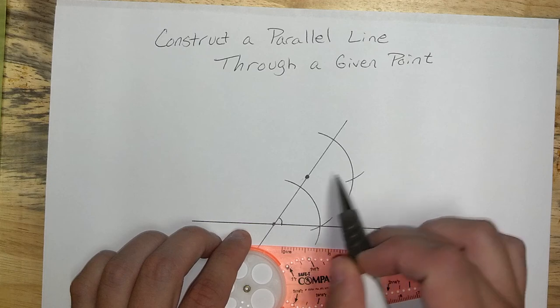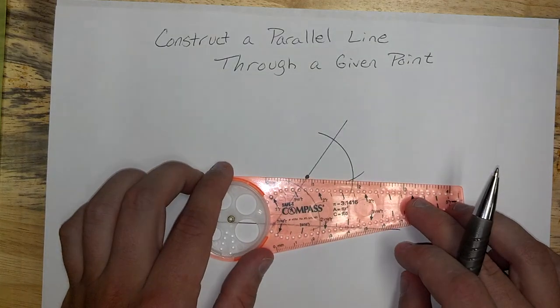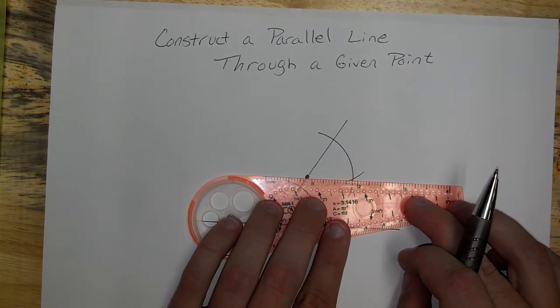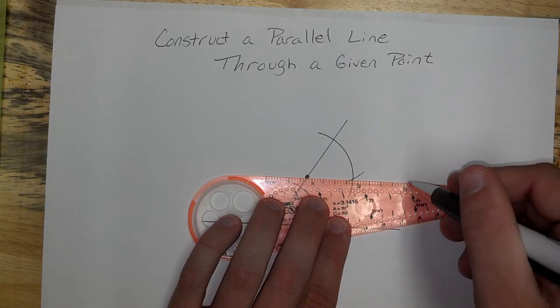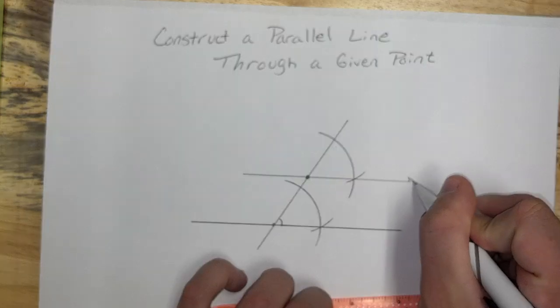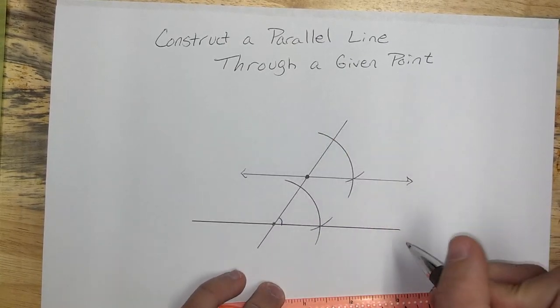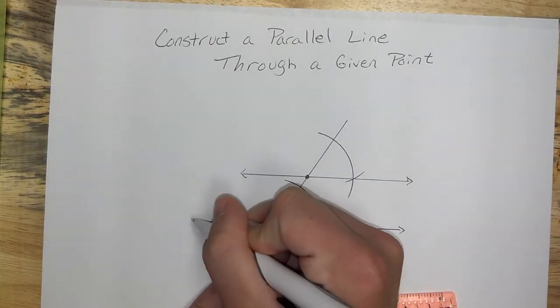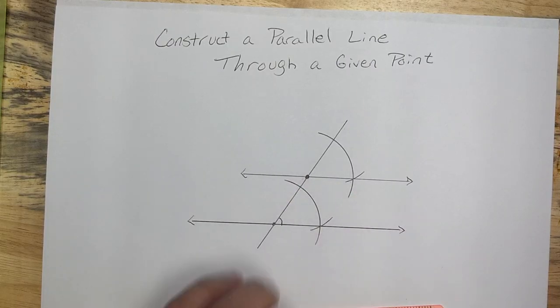Now that we have a crisscross here and our original dot, go ahead and connect the lines. Make sure that you do it correctly. And this line here is going to be parallel to our original line down here. Pretty nifty.